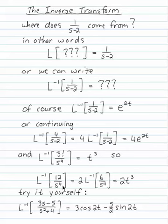So if I saw 12 over s to the 4th, I'd think of it as 2 times 6 over s to the 4th. Factor out the 2, leave the 6 behind. That's 3 factorial. So this is 2 times the inverse Laplace transform of 3 factorial over s to the 4th. That's 2 times t cubed.